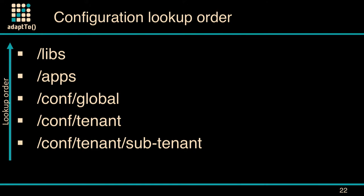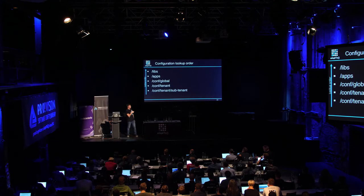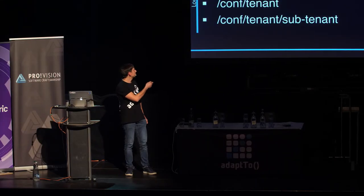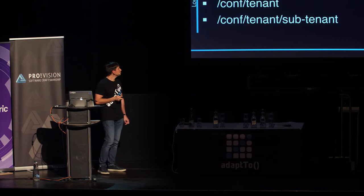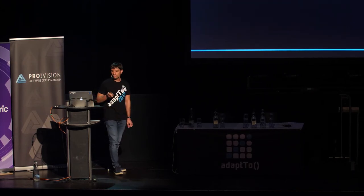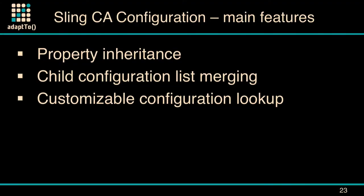This is a short example of how you can read the properties: you use a configuration resolver, fetch a config builder using the current resource as a context, and based on its name you can get the properties as a value map. This will return the properties from apps, conf, or libs, depending on which one the system finds. If inheritance is configured, you will actually get a merge between your custom configuration and the out-of-the-box one. The Sling context-aware configuration feature is a very complex resolution algorithm, allowing very good separation of concerns for the different producers. The lookup order is: libs for out-of-the-box configs, apps for overlaid configs, then conf-global as global fallbacks, and then conf-tenant for tenant-level customizations.